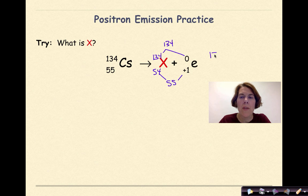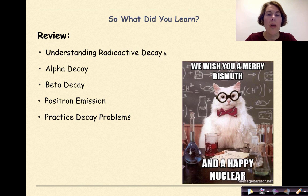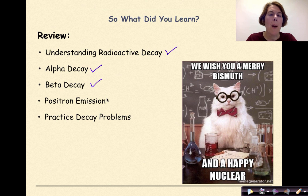So in the end, I'm going to write 134 over 54 with a symbol of Xe. So what did you learn? We answered the question, what is radioactive decay? We talked about alpha decay, beta decay, positron emission, and then we did some practice decay problems. Need more help? Feel free to contact me. Have a great day.